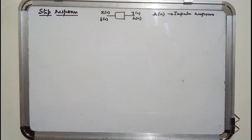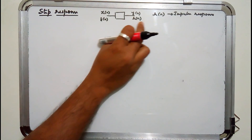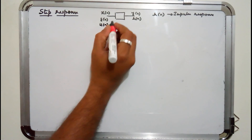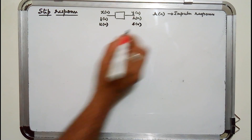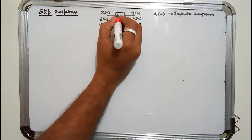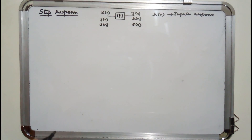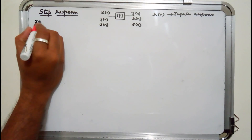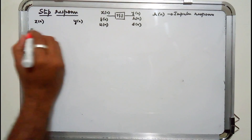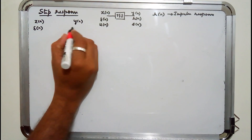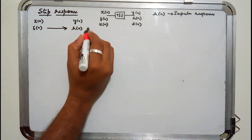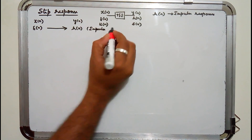Now we need to know what is step response. When the input was impulse, the response we got is impulse response. Now if the input is a step function, the output you get is called step response. This is the transformation of the system. If input is impulse, output is h of n — that is, h of n is called impulse response.